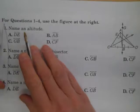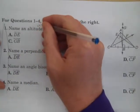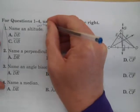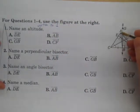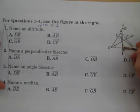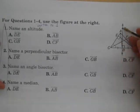Number one, name an altitude. Well, an altitude, what we need to remember, it goes from a vertex. A segment goes vertex to perpendicular. So here's a vertex A, and this is going down to B, but notice that's not where the perpendicular is. The perpendicular is from G, so that is not an altitude.